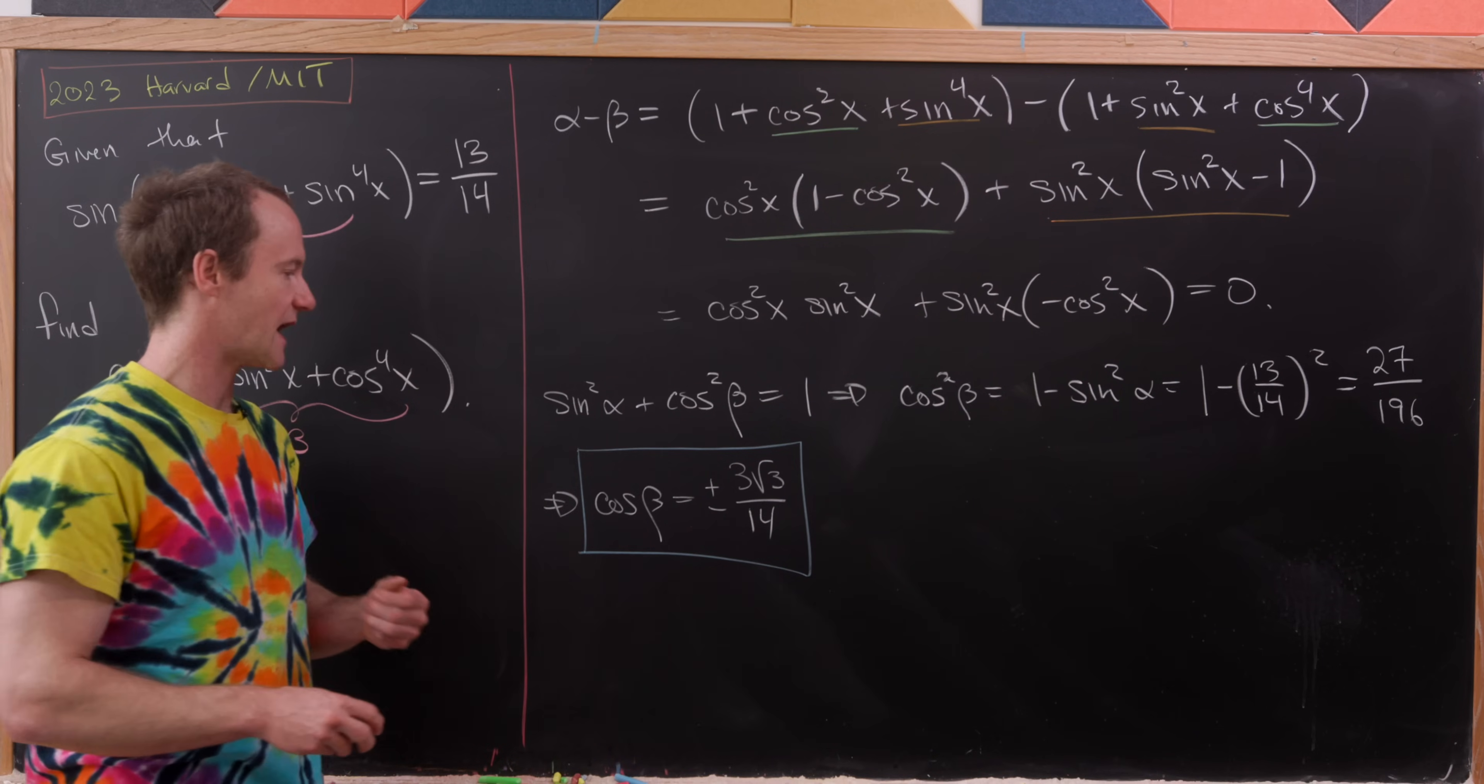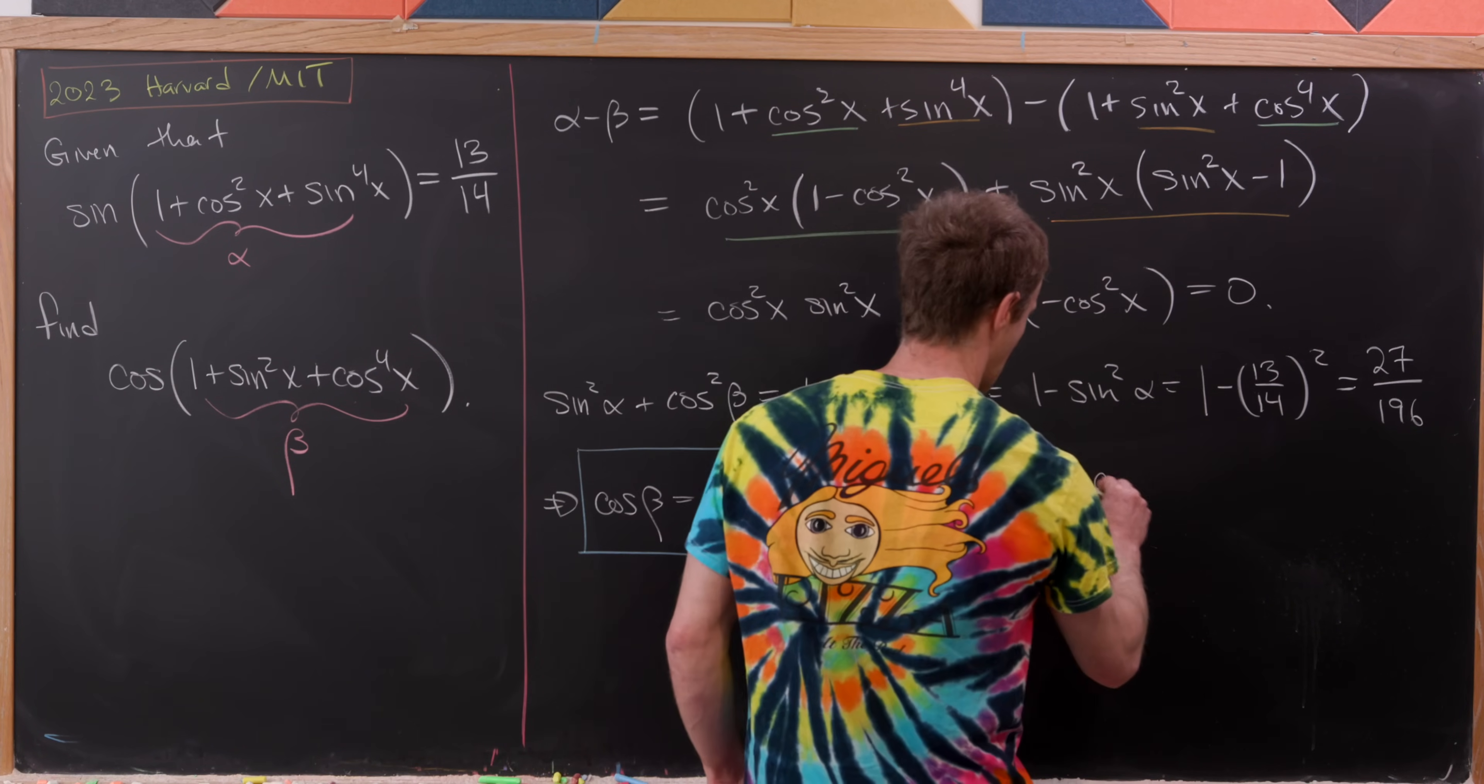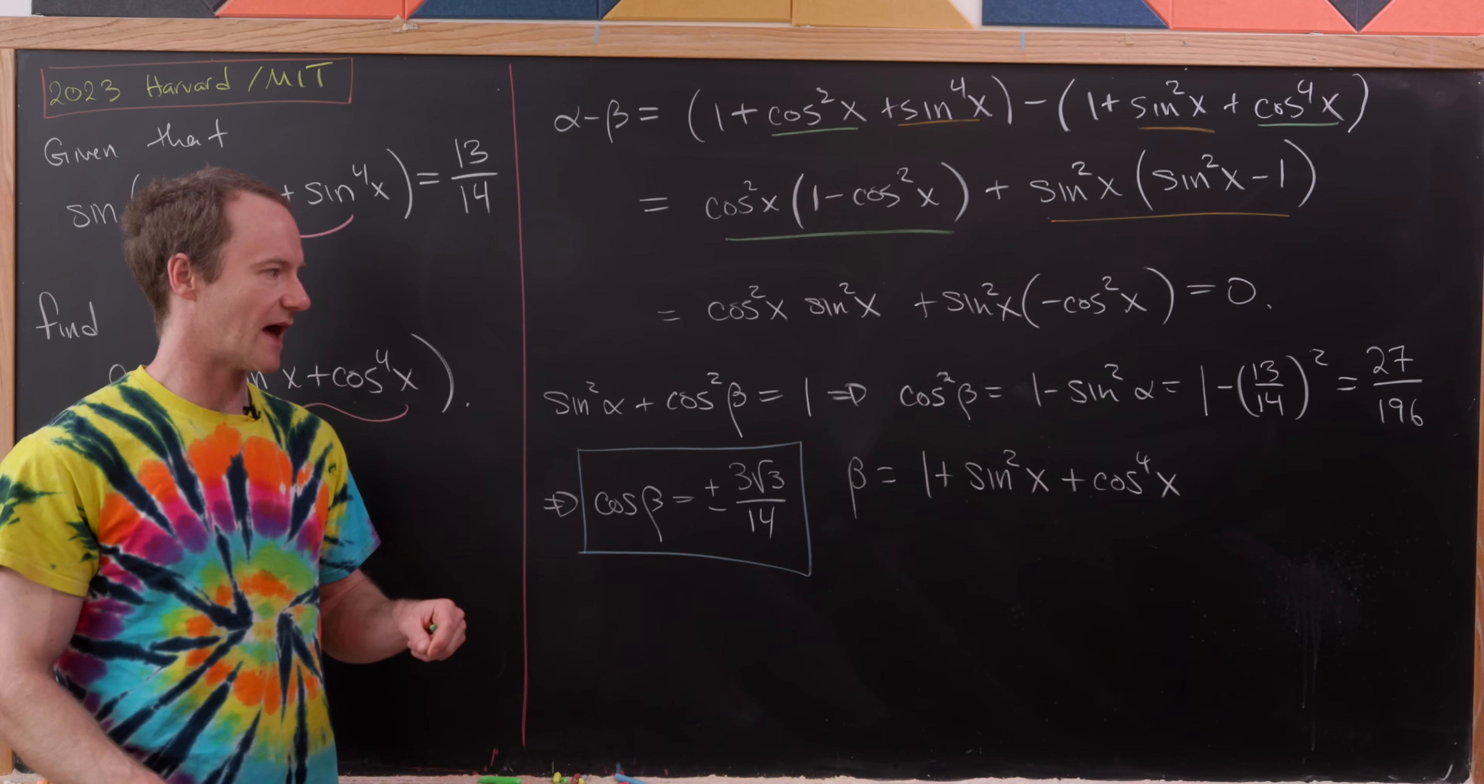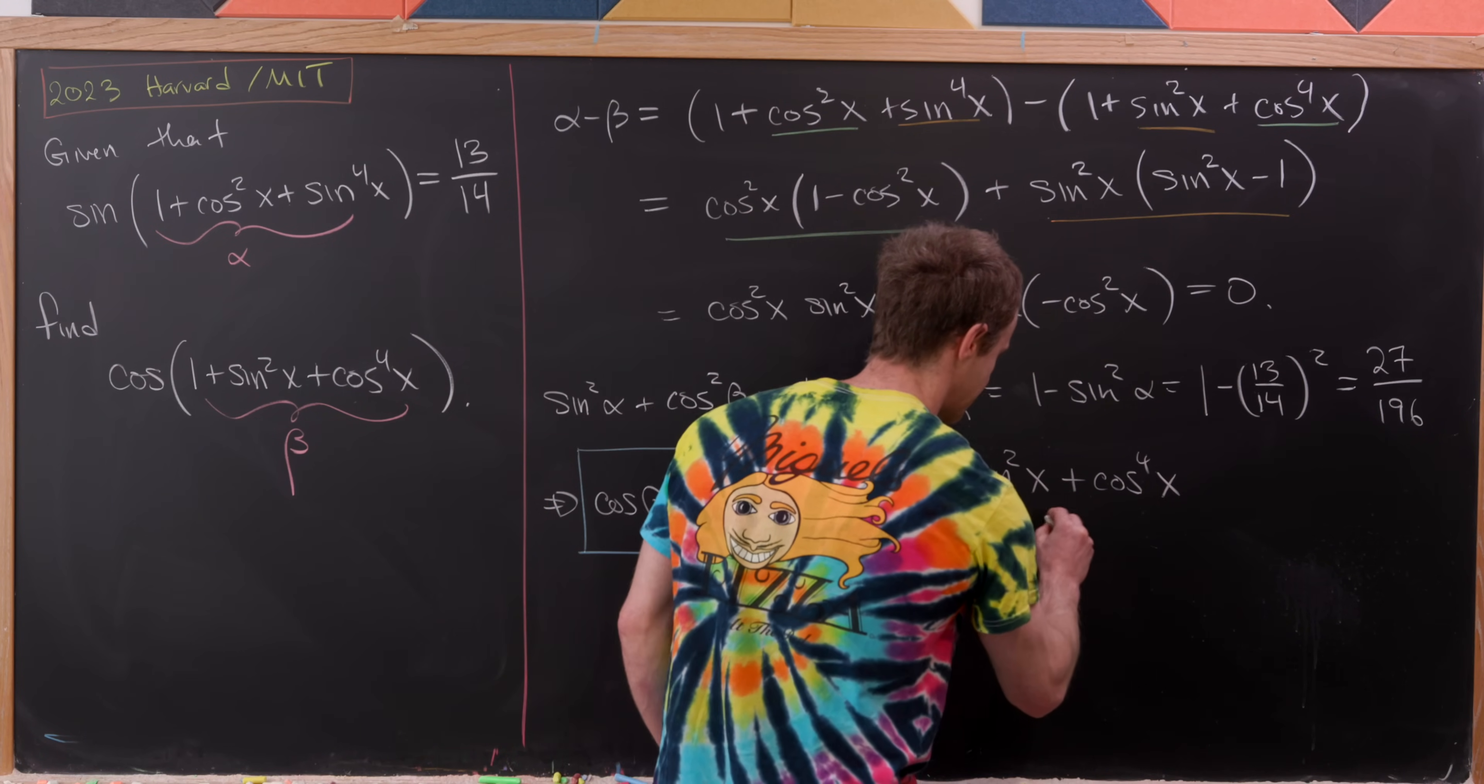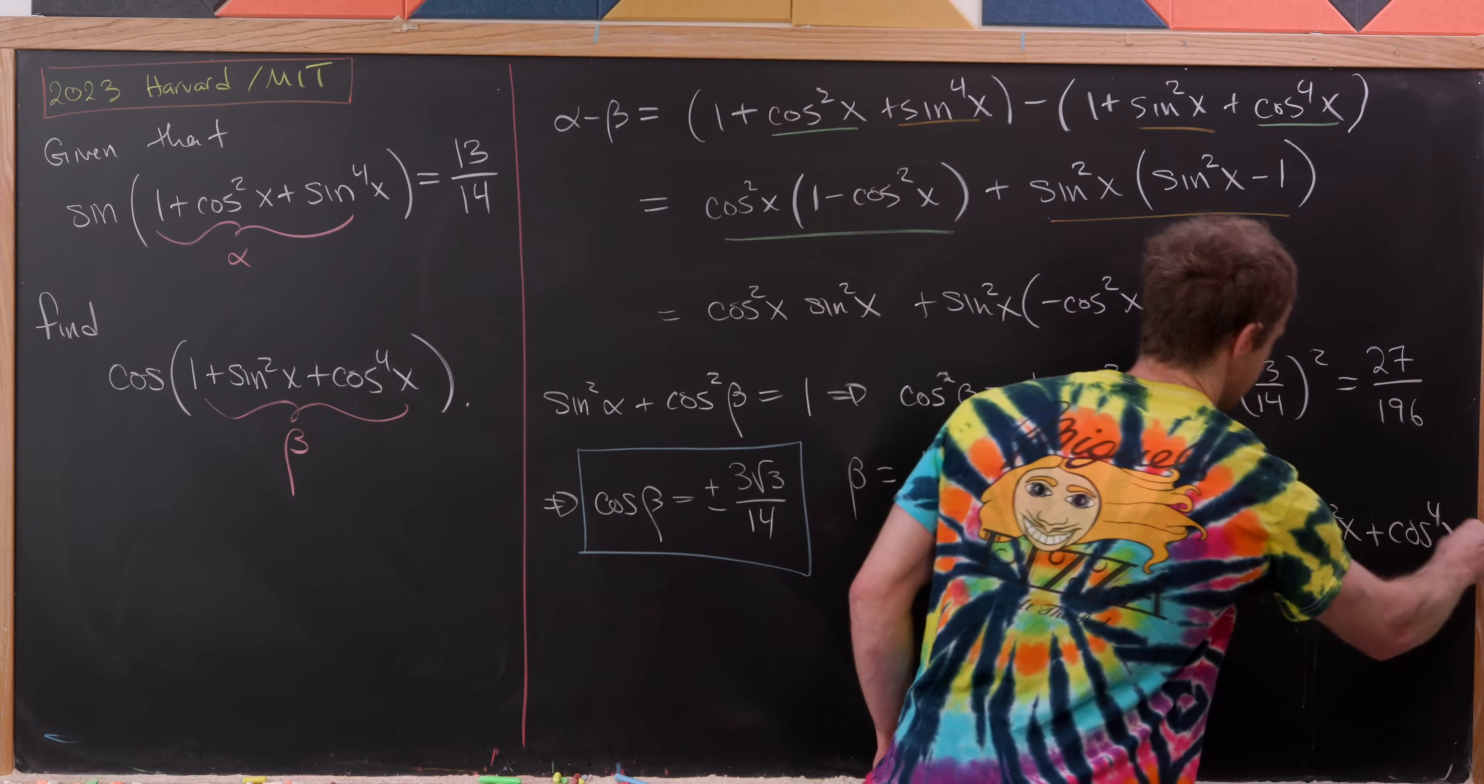So how can we do that? Let's observe that β = 1 + sin²x + cos⁴x. But now what I can do is I can take that sin²x and write it as 1 - cos²x. So this is going to now be equal to 1 + 1 - cos²x + cos⁴x. In other words, it's going to be 2 - cos²x + cos⁴x.